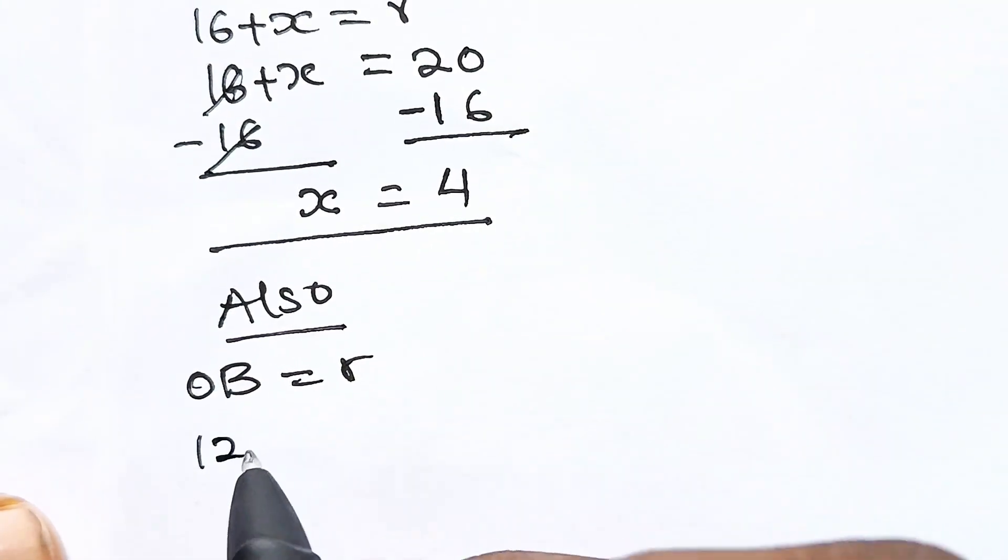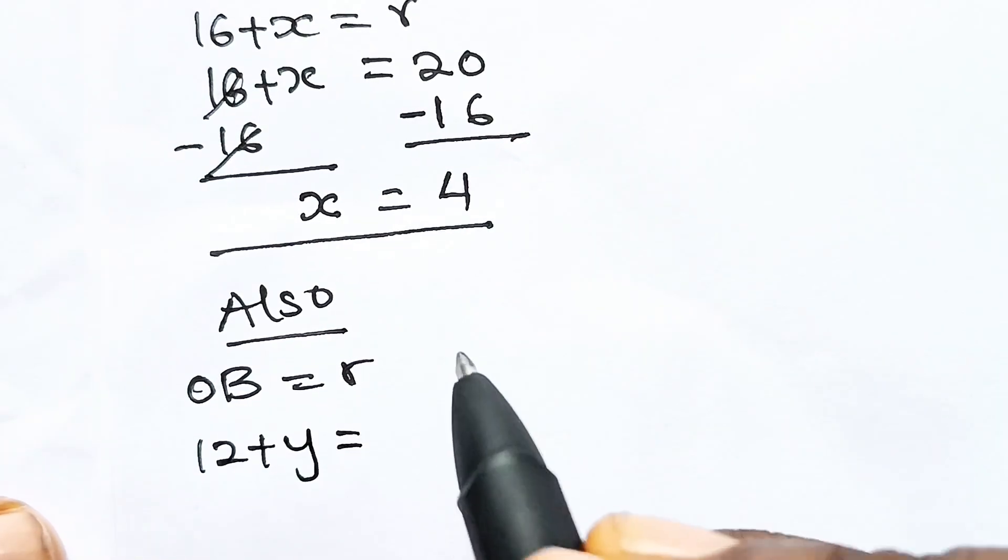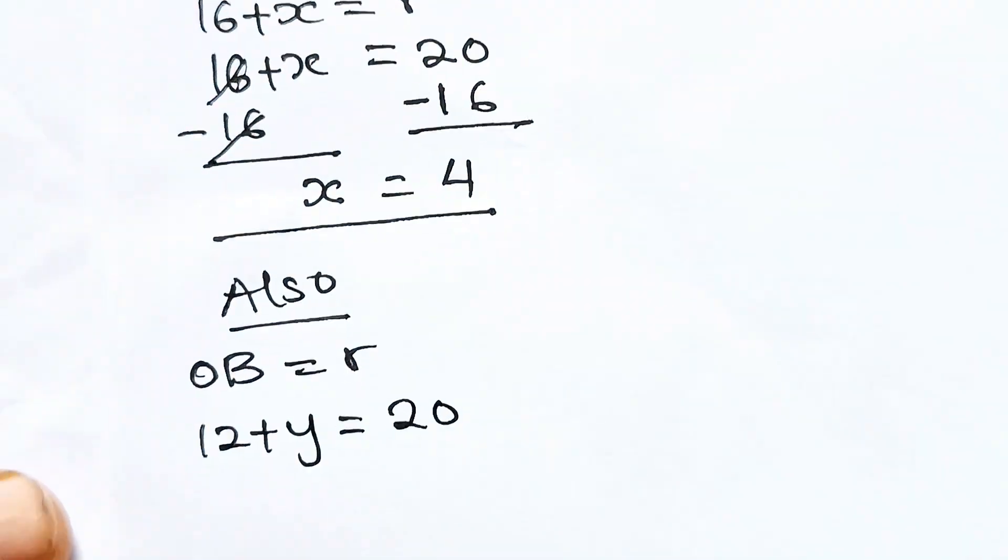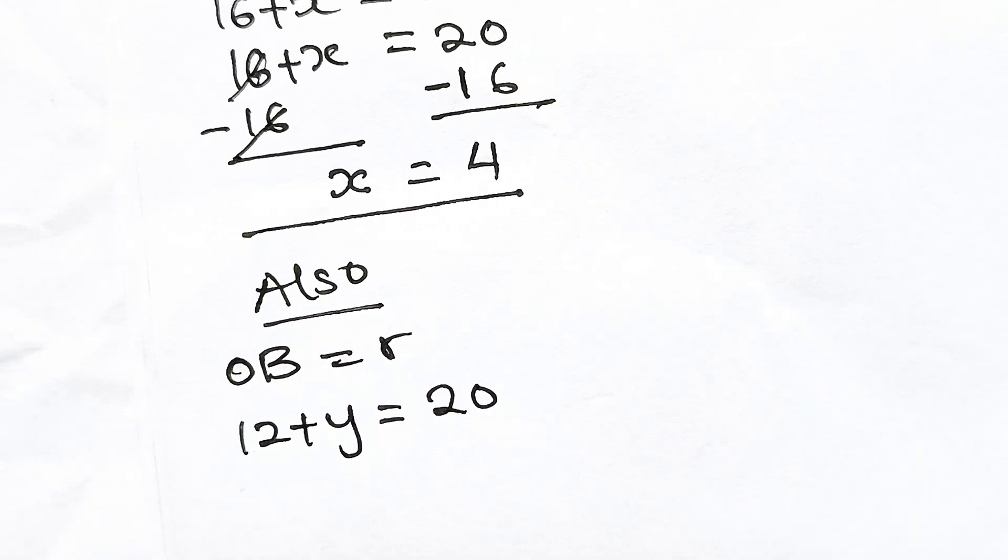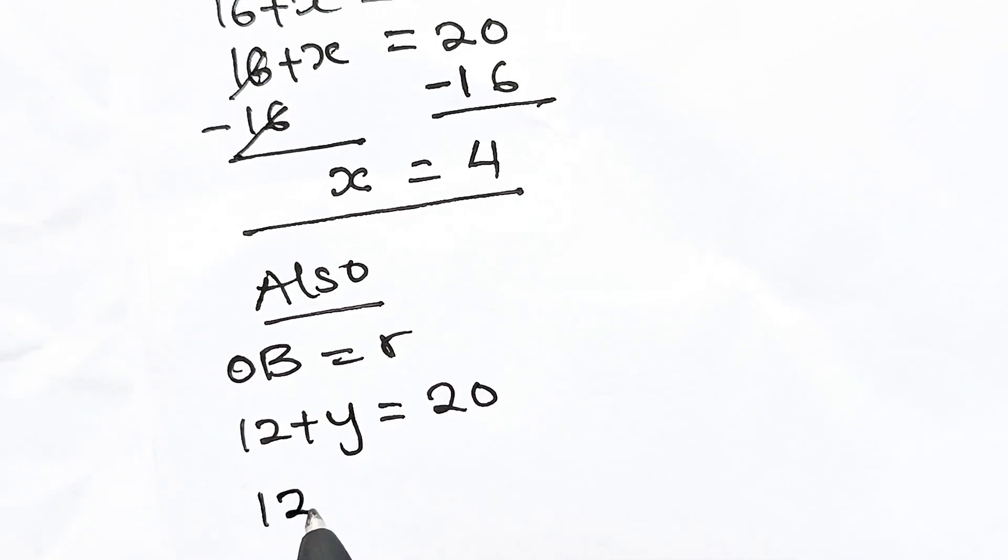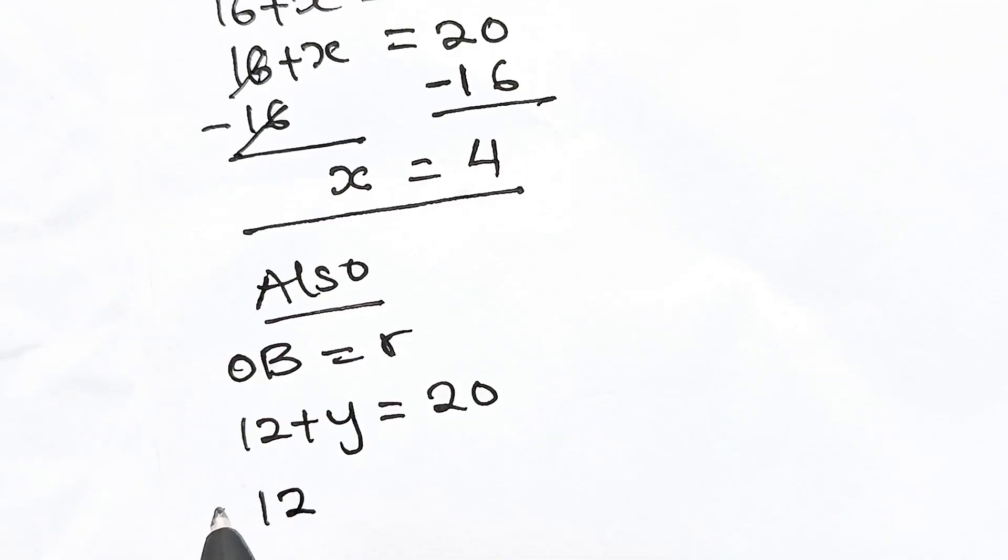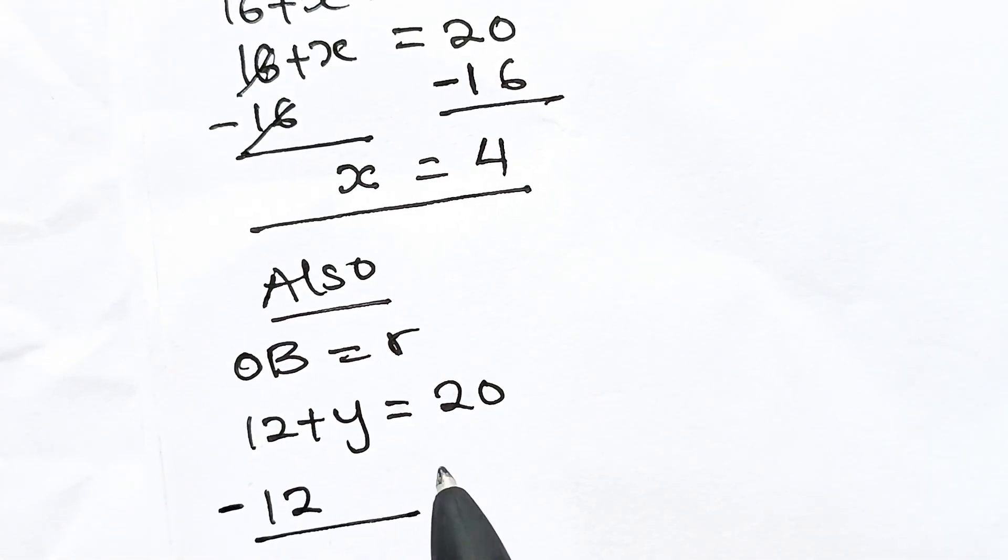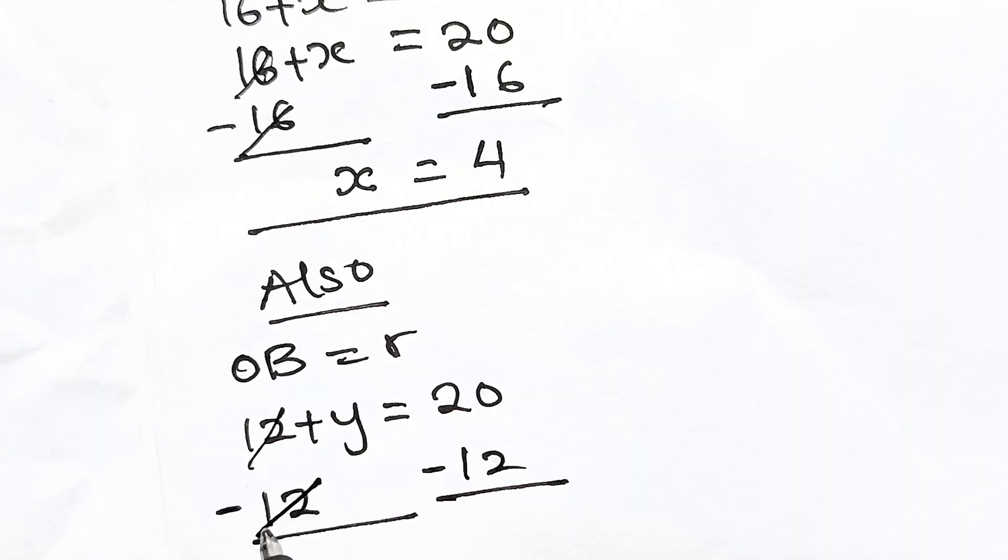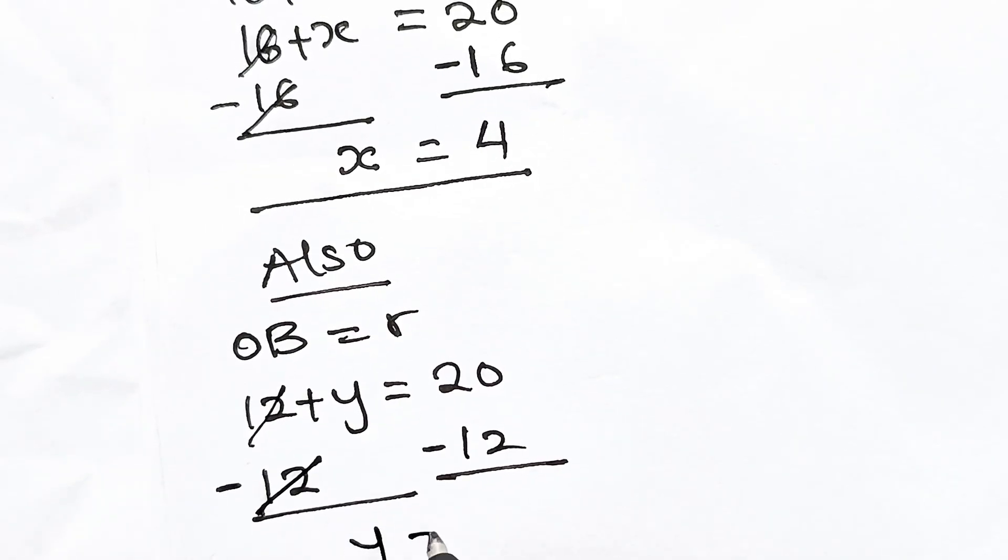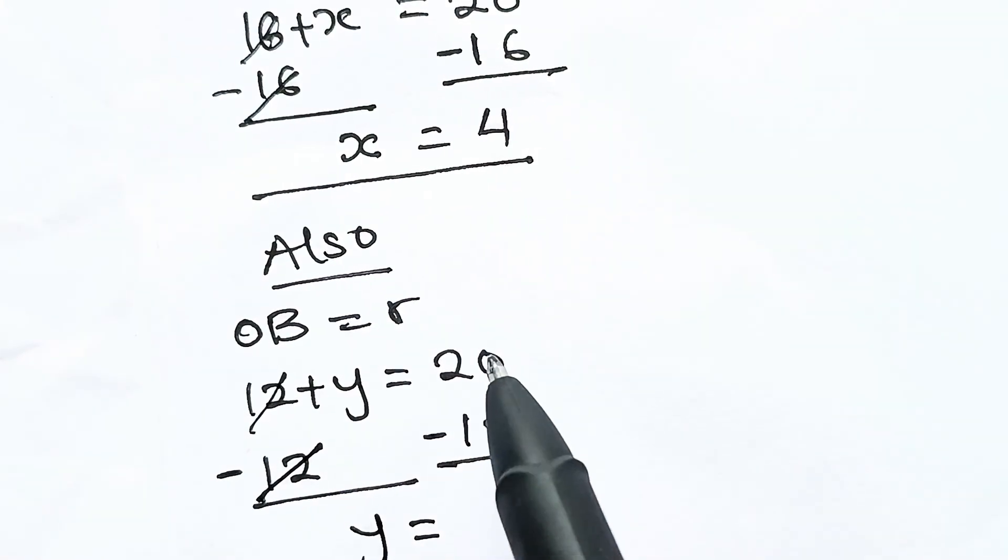So we have 12 + y = r, and r is 20. So 12 + y = 20. Subtracting 12 from both sides, y = 20 - 12 = 8.